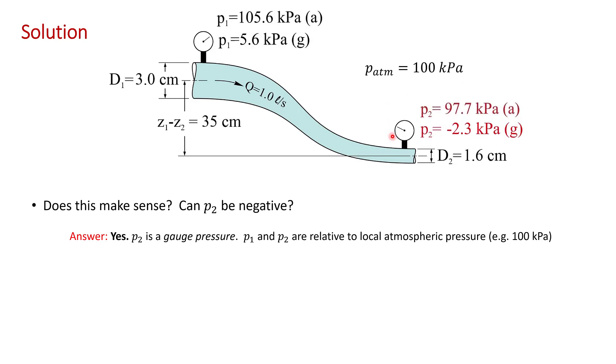For example, if the local atmospheric pressure was 100 kilopascals, then the absolute pressure at the inlet would be 105.6 kilopascals, and the absolute pressure at the outlet would be 97.7 kilopascals.